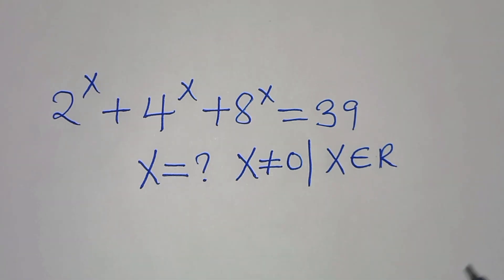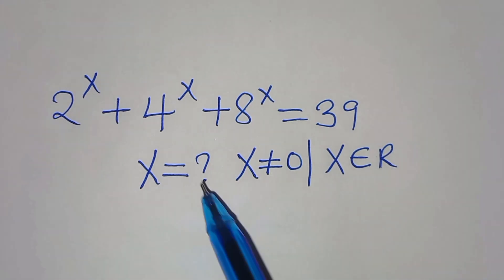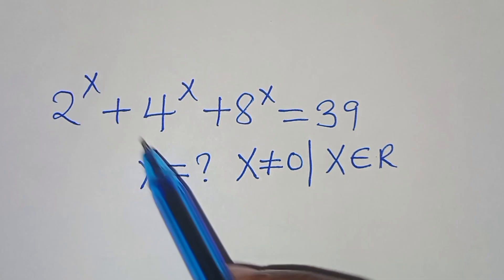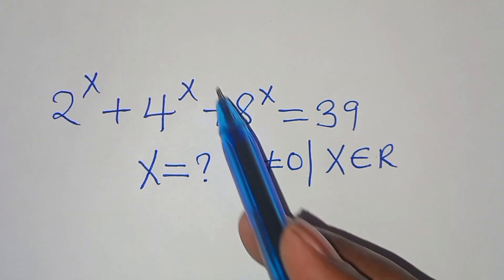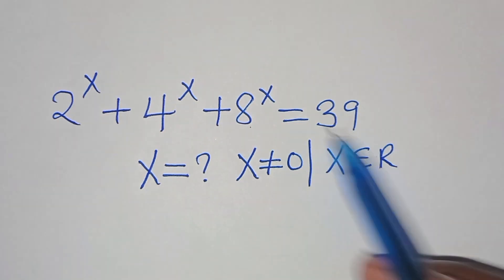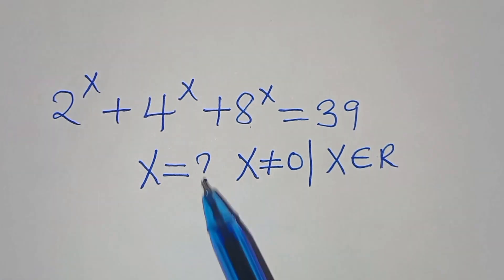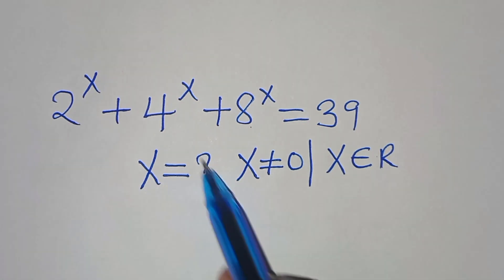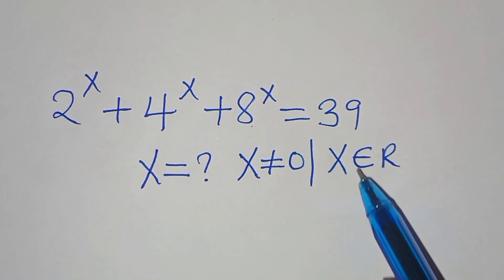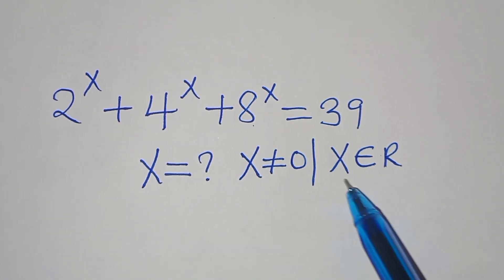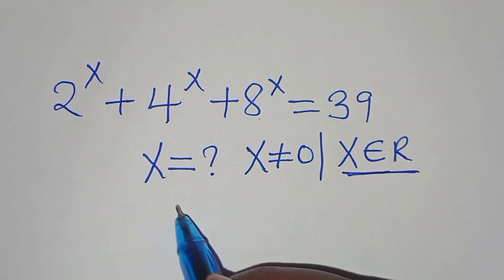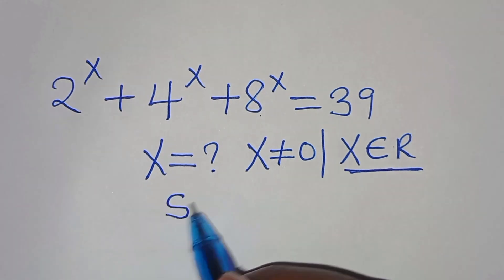Hello everyone, welcome to solve this nice algebra problem: 2 to the power of x plus 4 to the power of x plus 8 to the power of x is equal to 39. What is the value of x, given that x is not equal to 0 and x is a member of the real numbers? Let's present the solution from here.